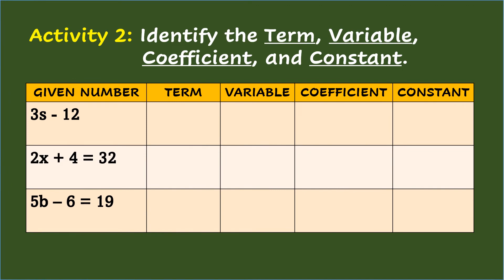Activity 2: Identify the term, variable, coefficient, and constant. Number 1: 3s minus 12. The terms are 3s and 12. The variable is the letter s. The coefficient is 3. And the constant is 12.